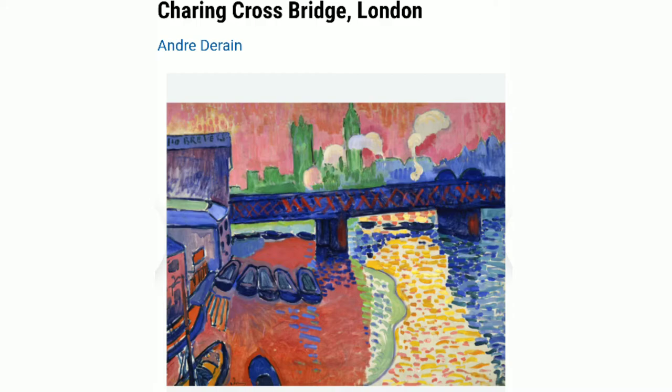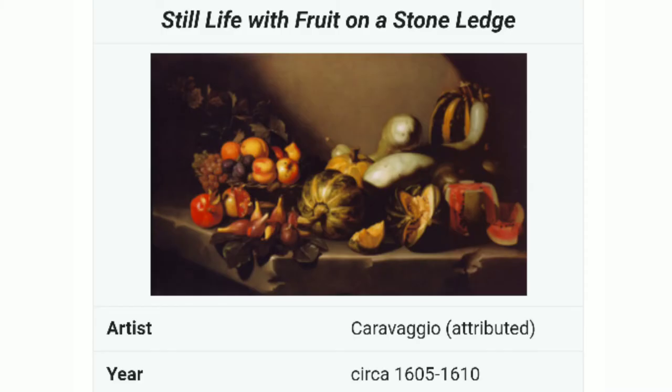Another type is technique variance, where we can use different types of techniques in a single artwork to create variety. Shape variance is another method — we can use different types of shapes like geometric shape against organic shape, big or small shape, solid or weak shape, colorful or dull shape, etc. to create variance. There are also other types like edge variance.